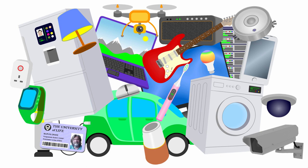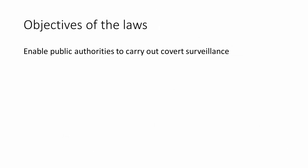95% of all serious crime investigations these days involve digital communications data. The power to conduct covert surveillance is a vital tool for the prevention and detection of crime, to protect national security and to protect public health and safety. The objective of these laws is therefore to enable public authorities to carry out covert surveillance in order to identify and investigate potential threats.